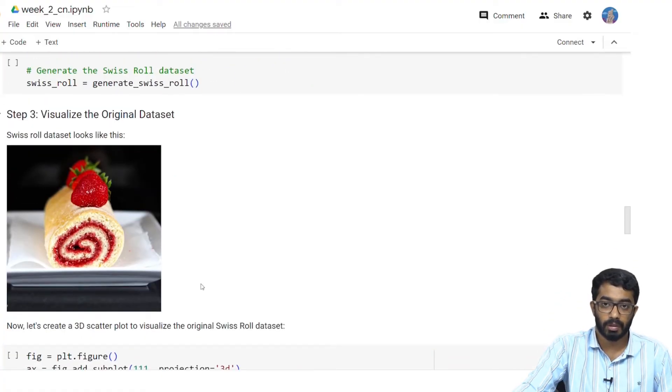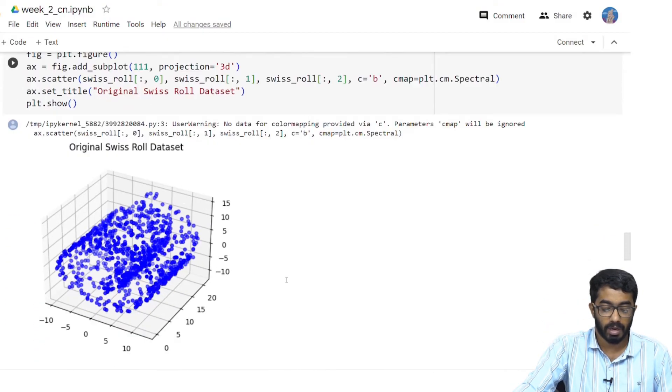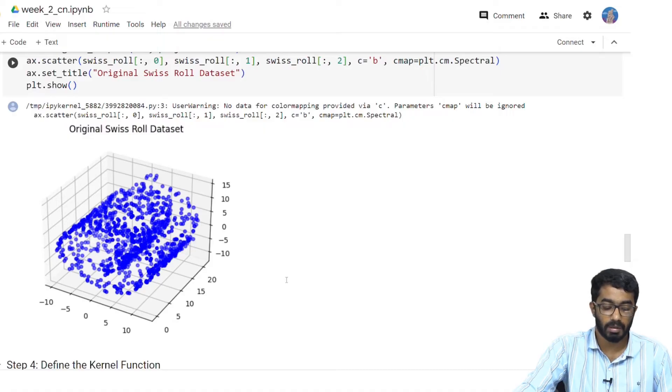The visual representation of the data set should ideally look like this Swiss roll. So let us plot it and see how it looks like. As you can see the plot of our data set looks somewhat similar to the Swiss roll.